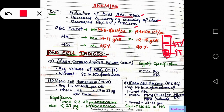Now let us look at the red cell indices. The first is mean cell volume or MCV. MCV denotes the average volume of a RBC in the units of femtolitre. Normal mean corpuscular volume is around 80 to 100 femtolitres. Since MCV is the volume of one RBC, we can get MCV by dividing PCV — that is the total volume of all the RBCs — divided by RBC count, to get the average volume.